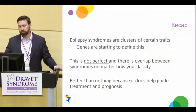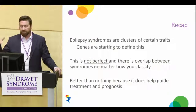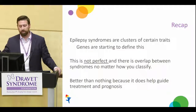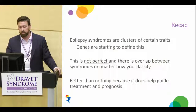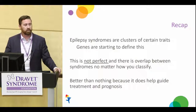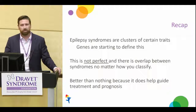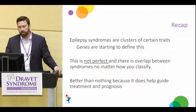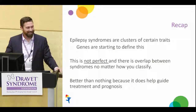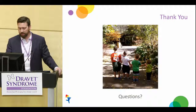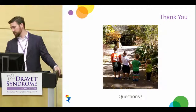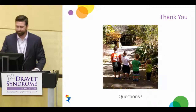To sum up: epilepsy syndromes are a cluster of certain traits. Genes are starting to be used to define epilepsy syndromes, but we're still sorting that out and don't always have genes for all conditions. Neither is a perfect system — either way, you can have overlapping symptoms, confusing cases, and patients who don't fit perfectly. But either of these systems is better than nothing, and in some places one will be more useful than the other. I'm happy to take questions.